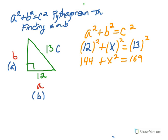Using PEMDAS we simplify and we get 12 squared is 144, X squared is X squared, of course, and 13 squared is 169.